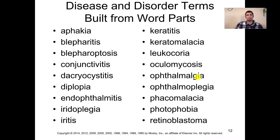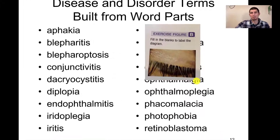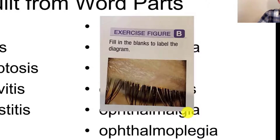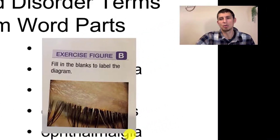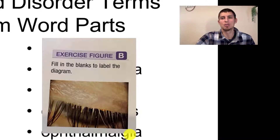Now we're on page 524, looking at some disease and disorder terms. Remember the combining form blepharo — here we see it as blepharitis, meaning an inflammation of the eyelid. Blepharo means eyelid, and here we see a picture of an inflamed eyelid that's actually crusting up because of secretions formed around it. In this case, you'd have some type of infection in the eye causing the eyelid to swell, resulting in crusty or goopy eyelids.